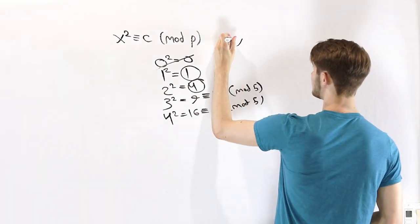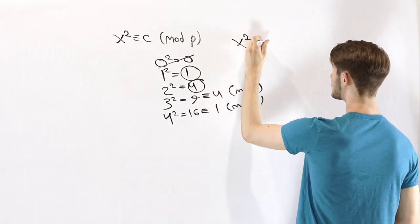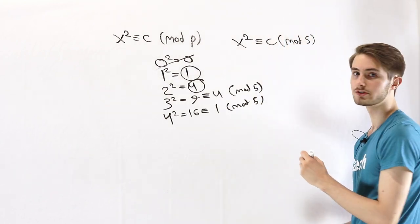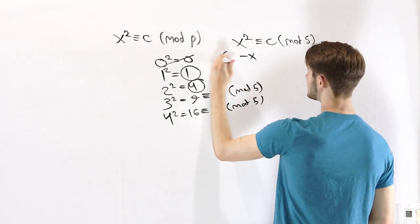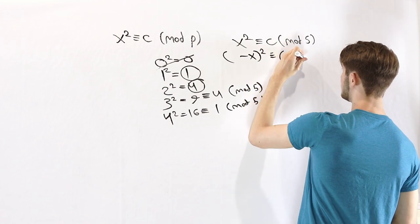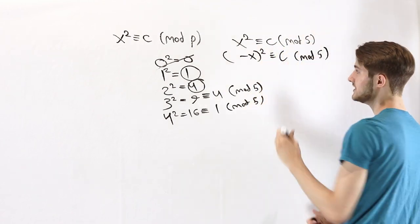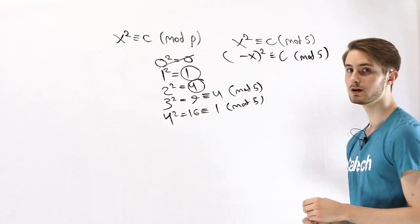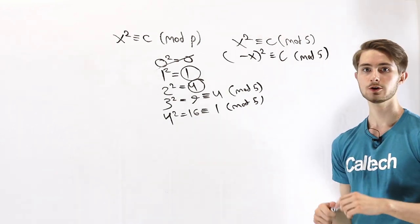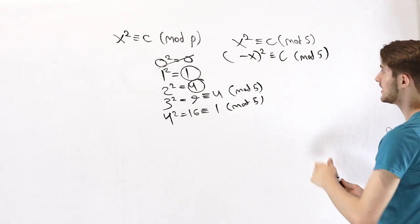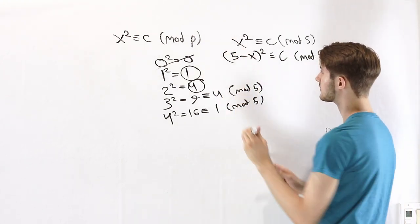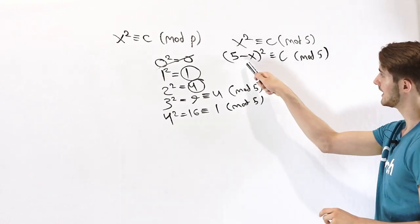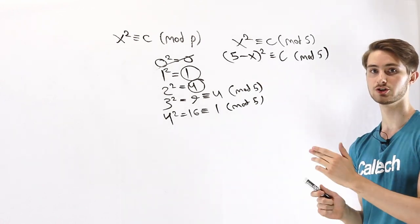Notice that if we have x squared being congruent to some number c mod 5, we also know that negative x squared is congruent to c mod 5 because negative x squared is the same as x squared. However, when we're working with modular arithmetic, we can also add a 5 into the inside of this exponent because 5 mod 5 is 0. So when we add this number, it's not going to change our result.